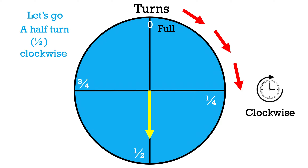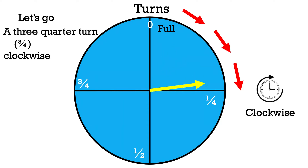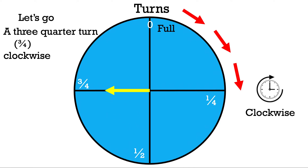Now let's move back to the starting point and do a three-quarter turn in the clockwise direction. We start moving the spinner to the right, pass a quarter turn, pass a half turn, and reach the three-quarters turn — three sections.